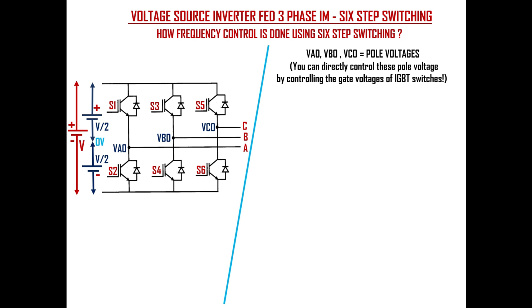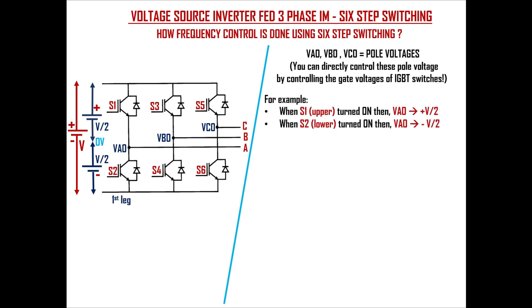Va0, Vb0, and Vc0 in the inverter are called pole voltages. It is the potential difference between the center point of two switches in one leg and ground. You can directly control these pole voltages by controlling the gate voltages of IGBT switches. For example, when the first leg upper transistor S1 turns on by giving the gate voltage, then Va0 is equal to plus Vd/2. When the first leg lower transistor S2 turns on by giving the gate voltage, then Va0 is equal to minus Vd/2.